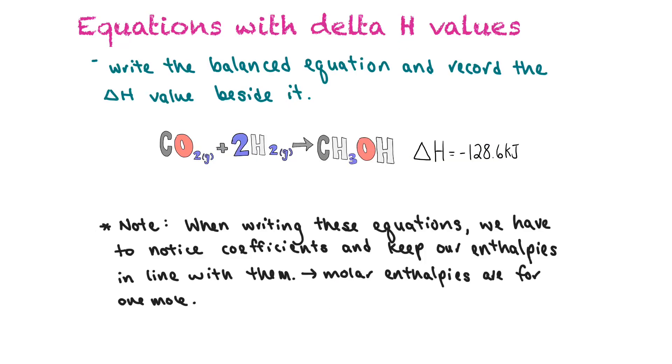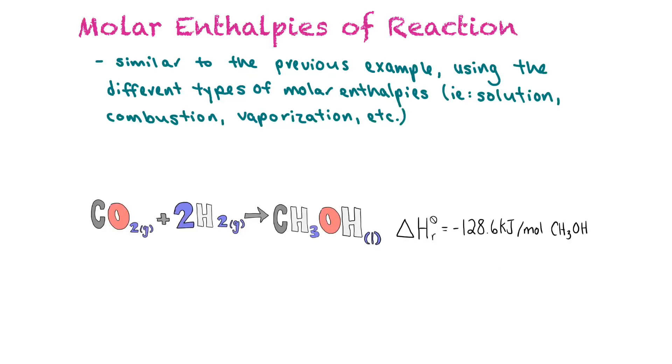Another way of representing energy would be writing the equation and having the delta H values recorded at the end. You write out the balanced equation and then record the delta H value beside it. In this case, the delta H value is negative, so this tells us that it's an exothermic reaction. But one thing to note, when you're writing these equations, we have to notice the coefficients and keep our enthalpies in line with them. Remember, sometimes we want to know the molar enthalpy and this would be for one mole of substance.